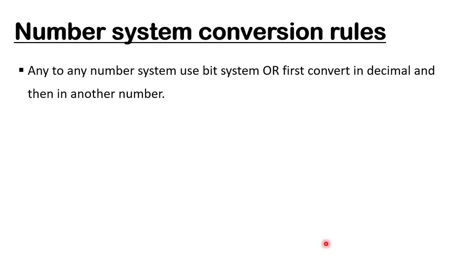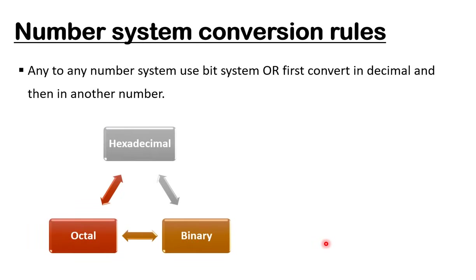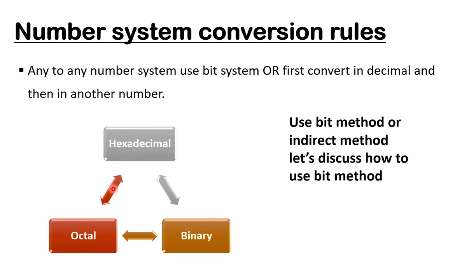The third rule: if you want to convert any number system to any other number system (not involving decimal directly), you first convert to decimal and then to the other system — or you use the bit method. Note that decimal is not part of the bit method diagram. If going decimal to any system, use division; for any to any number system conversion, use the bit method.